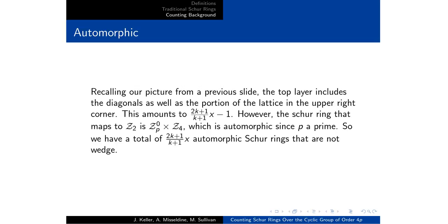However, the Schur ring that maps to the Z4 there is ZP0 cross Z4. So for a prime, all of the Schur rings are automorphic. So this direct product here is an automorphic, which means that there are 2k plus 1 k plus 1x plus 1. So there's 2k plus 1 over k plus 1x automorphic Schur rings that are specifically not wedge products.